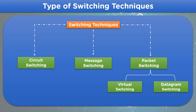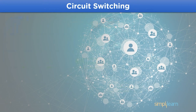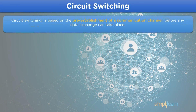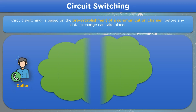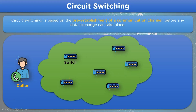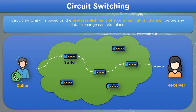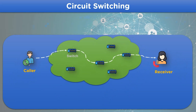Now let's look into some details regarding each type. First, we have circuit switching. In circuit switching, for data transmission to occur, a pre-established path is required between the sender and the receiver node. For example, assume that we call someone — this request is sent over to the network switches, and a route is established for the signal to pass through. After the system assigns a route, the receiver receives the call from the caller side. This is how it works.